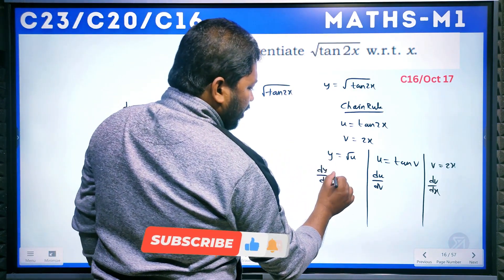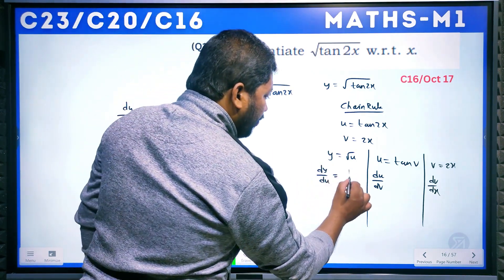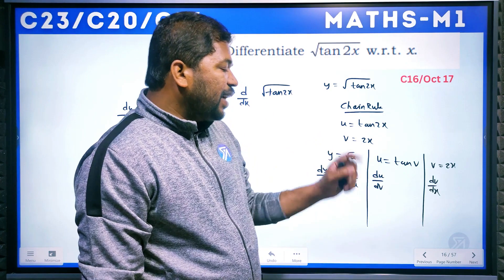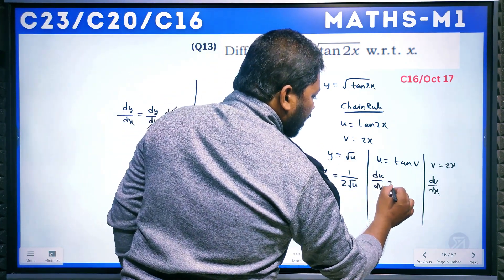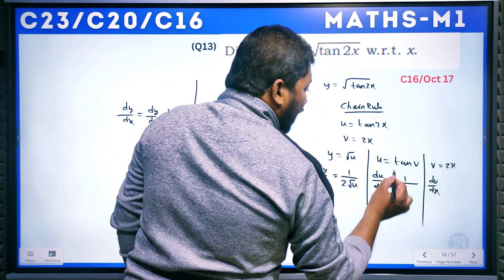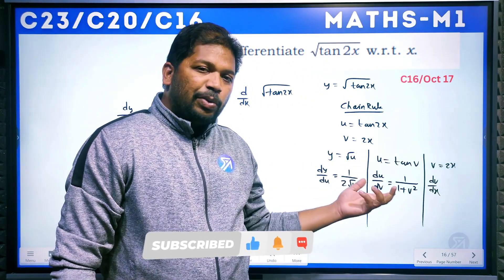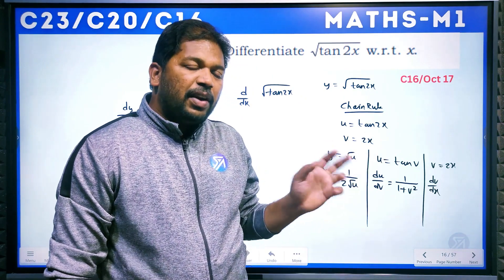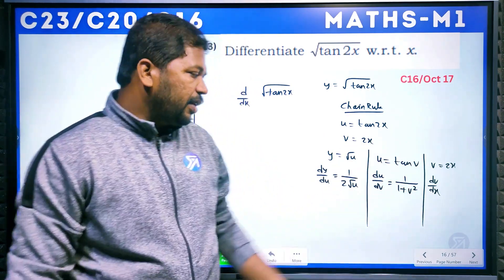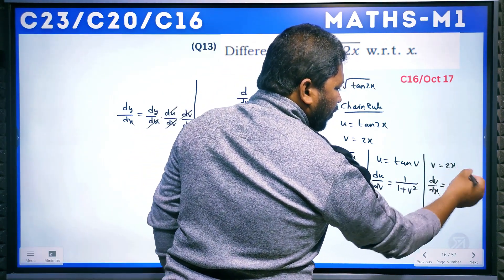Computing each part: d/du(√u) = 1/(2√u). For u = tan v, du/dv = d/dv(tan v) = 1/(1 + v²). For v = 2x, dv/dx = 2 · d/dx(x) = 2 · 1 = 2.